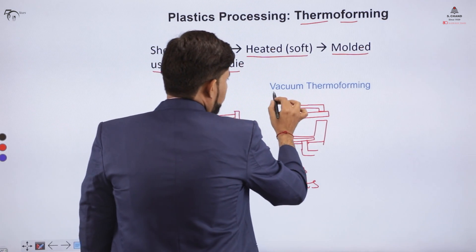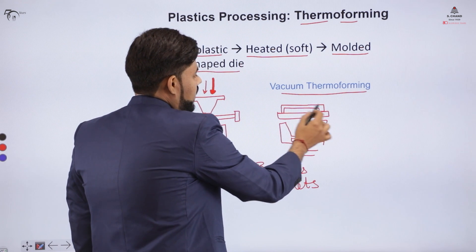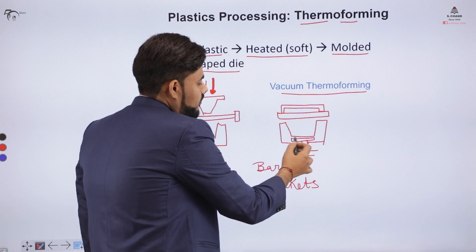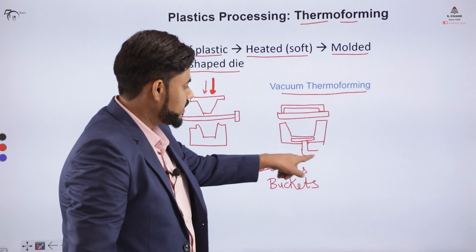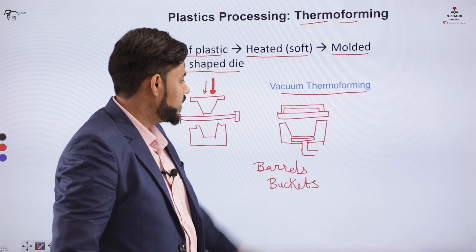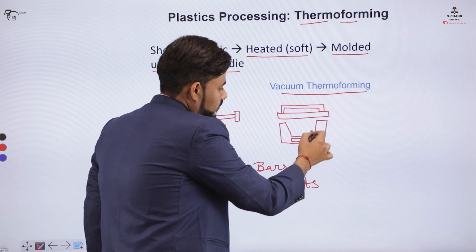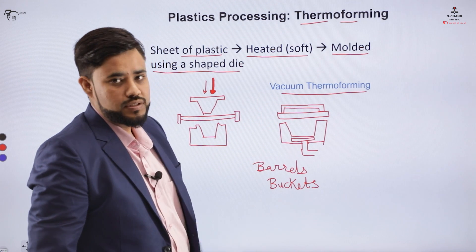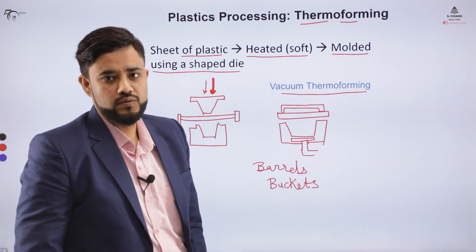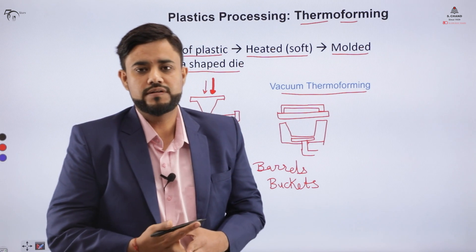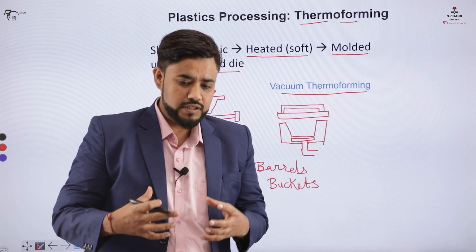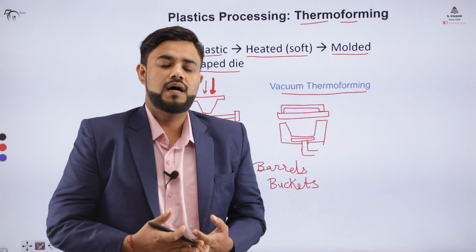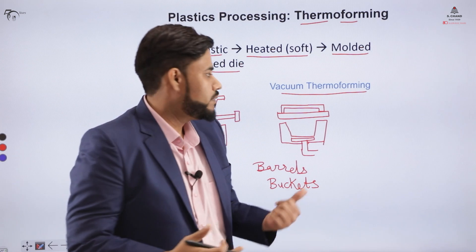Coming to vacuum thermoforming — in this case, a clamp holds the heated plastic on the surface. You have a die with a vacuum chamber, and vacuum is created on the surface of that die. Because of the vacuum, the plastic is drawn into the cavity and the shape is created. Household items like barrels or buckets are made with this vacuum thermoforming process. The disposable food-grade plastic packaging items you see nowadays are also given their shape using this vacuum thermoforming process.